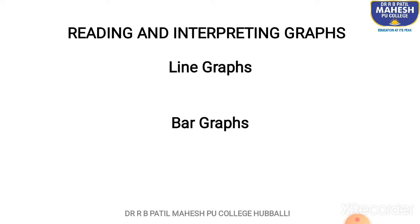Line graphs, bar graphs, and pie charts. Report writing in your syllabus is based on the statistical inference of a given data. That data can be in the form of a line graph, a bar graph — also known as a histogram — or pie charts. When data is given to you in any of these forms, you have to understand what it says and then write a report on that.